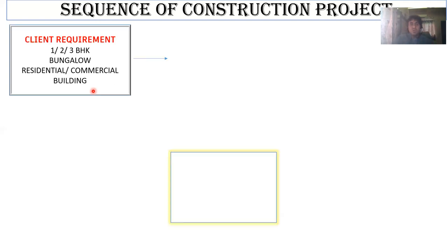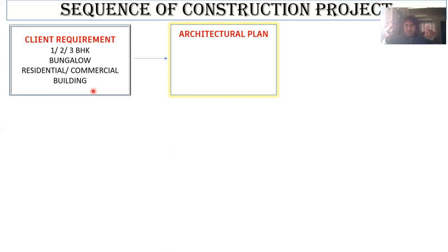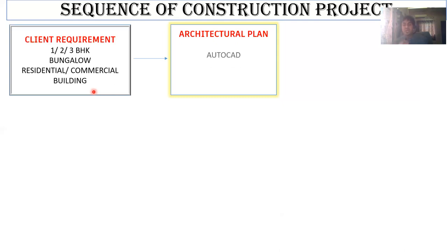Once you approach me as architect and structural engineer, I'm going to give you an architectural plan. You have a plot with a certain area and your plan is to construct a bungalow. So what I'm going to do is give you a plan showing where your kitchen comes, where your bedroom comes, where your living hall comes, the size of the bedroom — its length and breadth — where the washing machine goes, the utility area, the car parking space. All these things I'm going to mark on a plan and give it back to you using a software called AutoCAD.